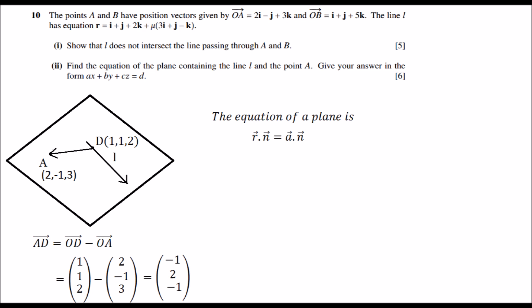We substitute in our values and we get (-1, 2, -1). Let's find n now. The formula is n equals the vector representing the direction of L cross the vector representing the direction of AD. Cross, because we are talking about the cross product of two vectors, not the dot product.